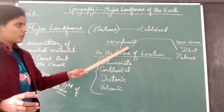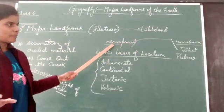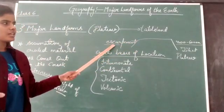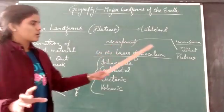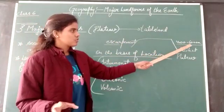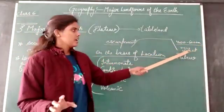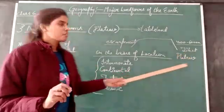The steep slope of the plateau is called escarpment. The highest plateau in the world varies from 4,000 to 6,000 meters in height.